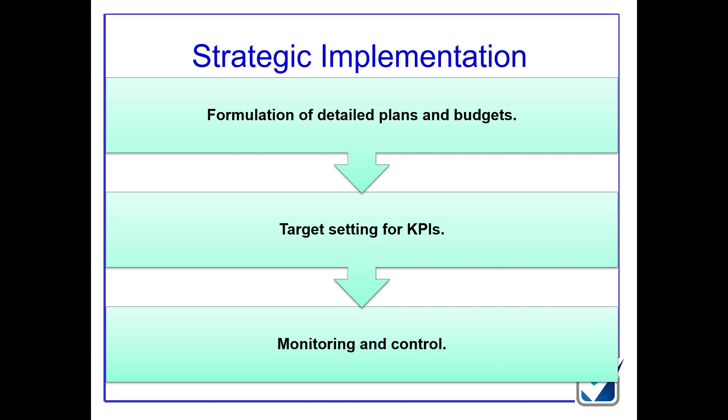The achievement or otherwise of these KPIs will then allow for monitoring and control. You can have feed-forward control, which means that having done an analysis of the external environment, you now don't think your current implemented plan will work, so you need to change it before there's a problem. Feedback control, on the other hand, is where something didn't go the way you thought it was going to go, so you change what's going to happen in the future. Feedback control is after the fact; feed-forward control is before the fact.